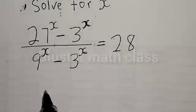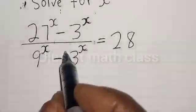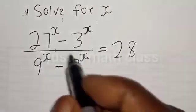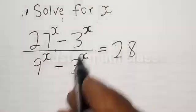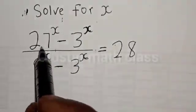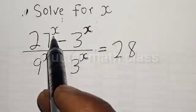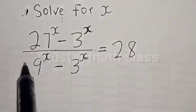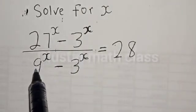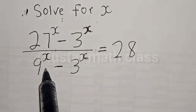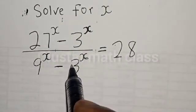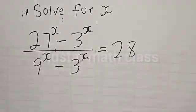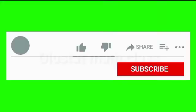Hi everyone, welcome to my class. In this class, we want to find the value of s from this given equation: 27 raised to power s minus 3 raised to power s, divided by 9 raised to power s minus 3 raised to power s, is equal to 28.